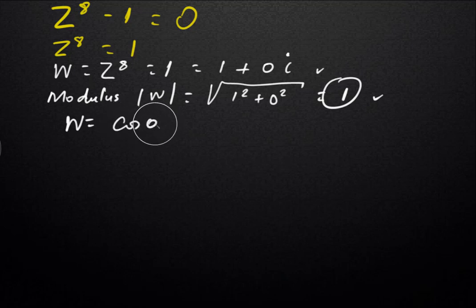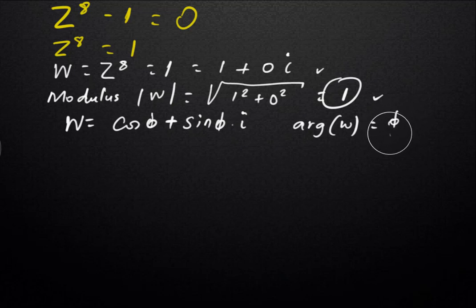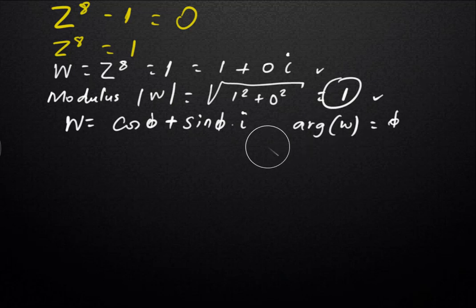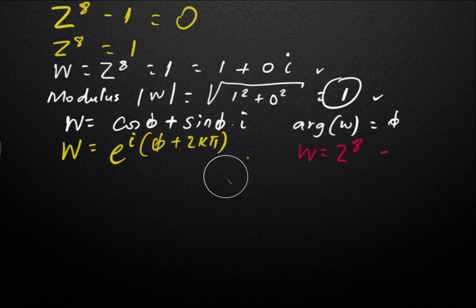We concentrate on the polar form of w. We can say w is equal to cosine 0 plus i sine 0, so the argument of w is 0. We can express this using the polar exponential format: w is equal to e to the power of i times (0 + 2kπ). And since w is equal to z to the power of 8, we now have to find z.